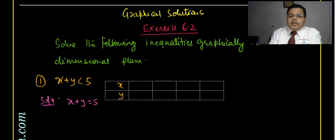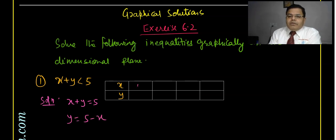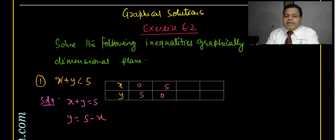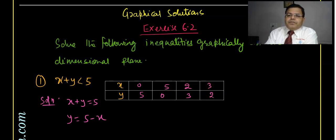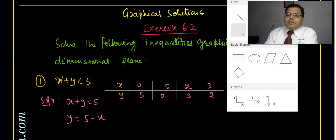If I write y equal to five minus x: put x equal to zero, y is five; when y equal to zero, x is five. Any other value can be taken arbitrarily — at least two values are needed. So if x is two, y is three; if x is three, y is two. Now we have to plot the graph of the function.